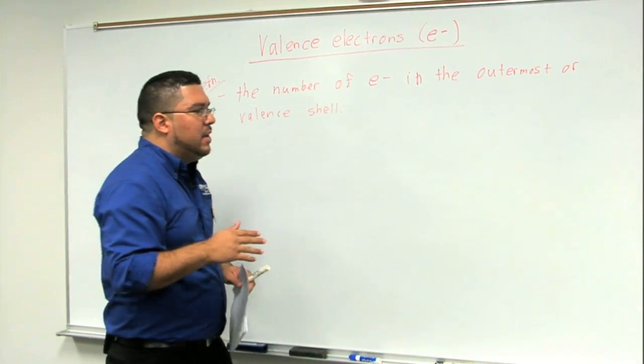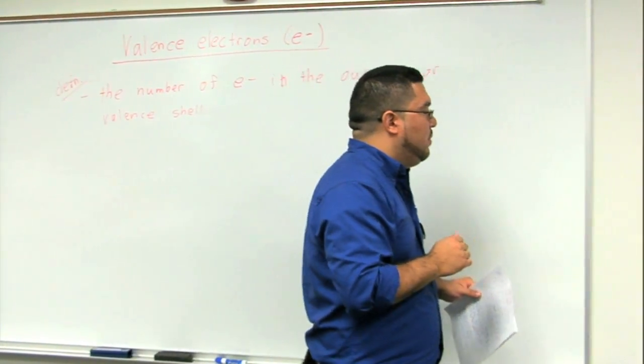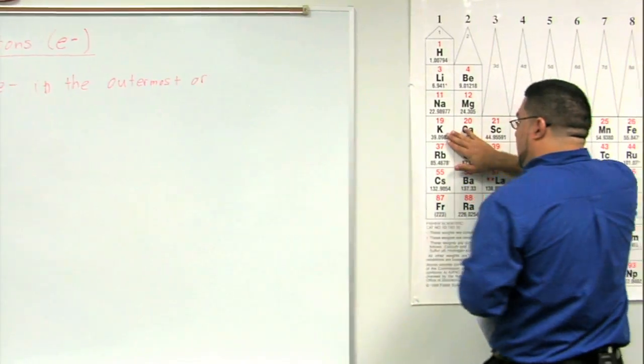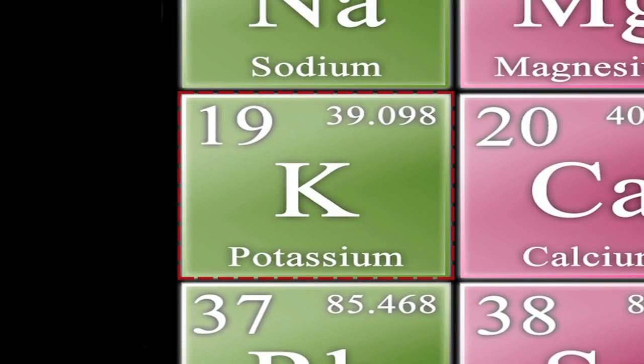So, if we want to get a better idea of that, we can look, for example, over here at potassium. If you look at potassium, potassium has a total number of 19 electrons, correct?